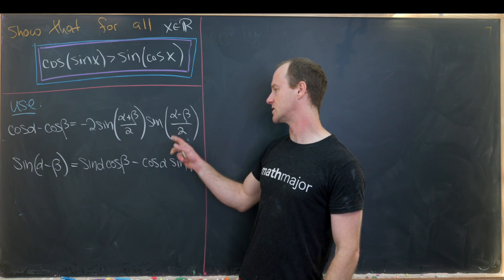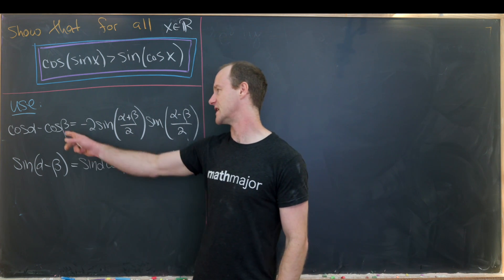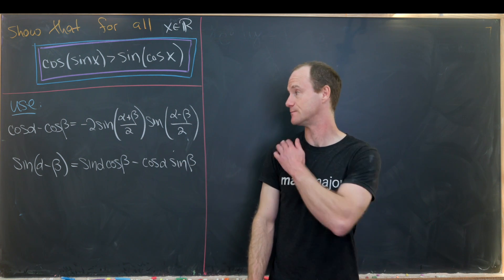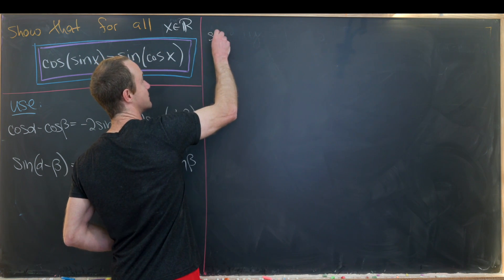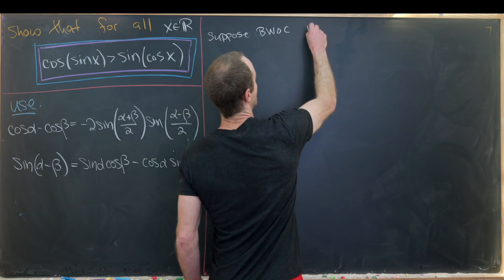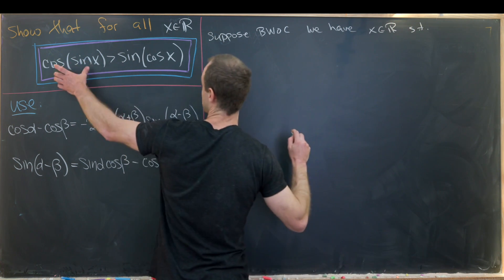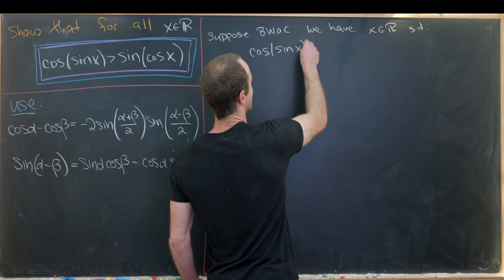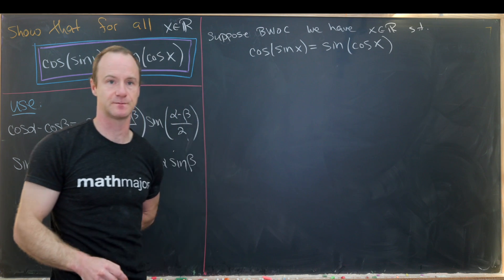We'll use the following two trigonometric identities: one is a difference formula for sine, and the other is a sum-to-product formula involving cosine and sine. So let's get into our solution. We want to suppose, by way of contradiction, that we have some x which is a real number such that cosine of sine of x is equal to sine of cosine of x.